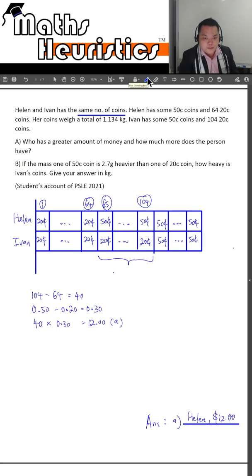Then as for part B, this is where the second unknown crops up. If the mass of one 50 cent coin is 2.7 grams heavier than one of the 20 cent coins, you would feel very tempted to find out the mass of a 50 cent coin or a 20 cent coin so that you can try to put in numbers to solve it. But over here, we find that we cannot obtain this value. So what do we have to do?